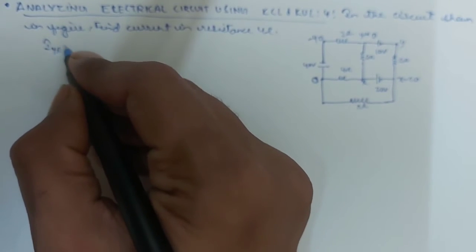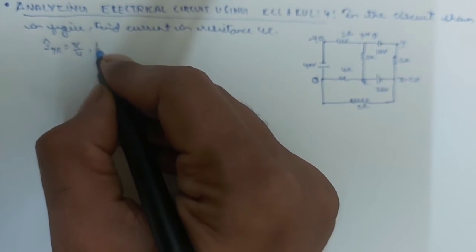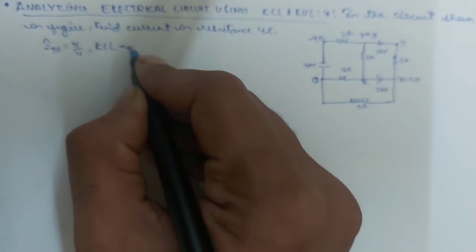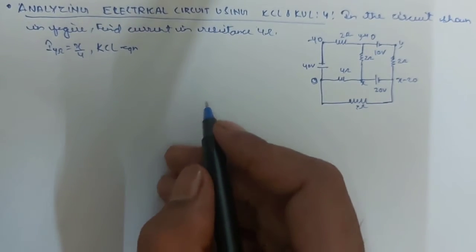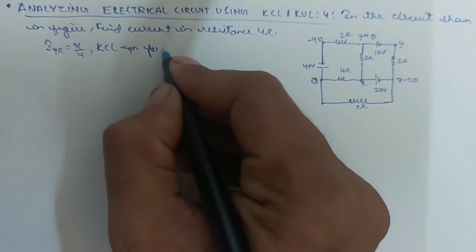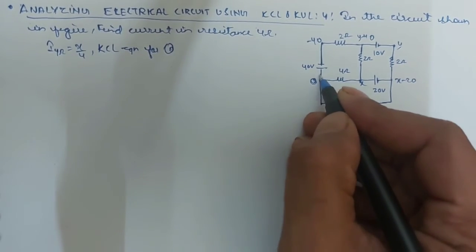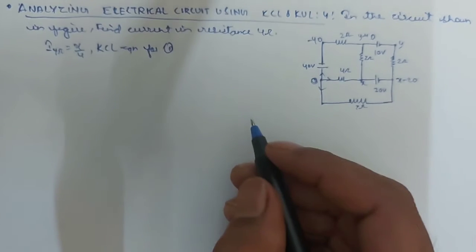So, it is x by 4. So, using KCL equation, using KCL equation for first 0 for this one. You can see this, this, this will go on.